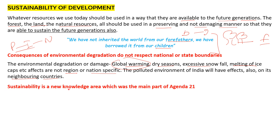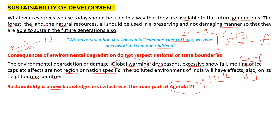Sustainability is a new knowledge area that was a main part of Agenda 21, which we have already read about in Geography Chapter 1. It is considered a new area because when natural resources were sufficient to meet our needs, the question of preserving them did not arise — there was a good balance between use and recreation of these resources. But when this balance was disturbed, with exhaustible or non-renewable resources such as oil reserves and coal reserves — that is fossil fuels — getting depleted very fast, people started thinking that our development model is not good. We must use natural resources in such a manner that future generations can also get and use them — this is called sustainability.